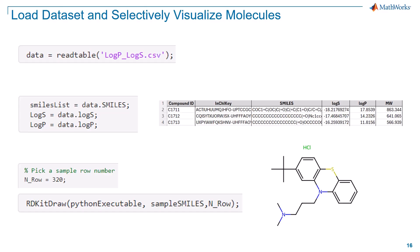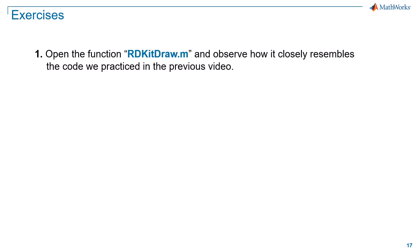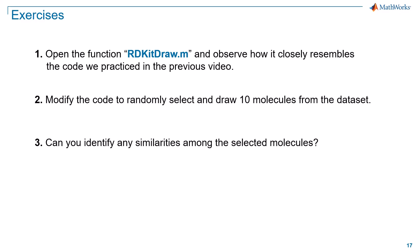Notice how you are using a custom-built MATLAB function called rdkit-draw for this purpose. As an exercise, open rdkit-draw and observe how it closely resembles the code that we practiced in the previous videos. You can also modify today's example code to randomly select and draw 10 molecules from the dataset instead of just one row. Now, can you identify any similarities among the selected molecules?